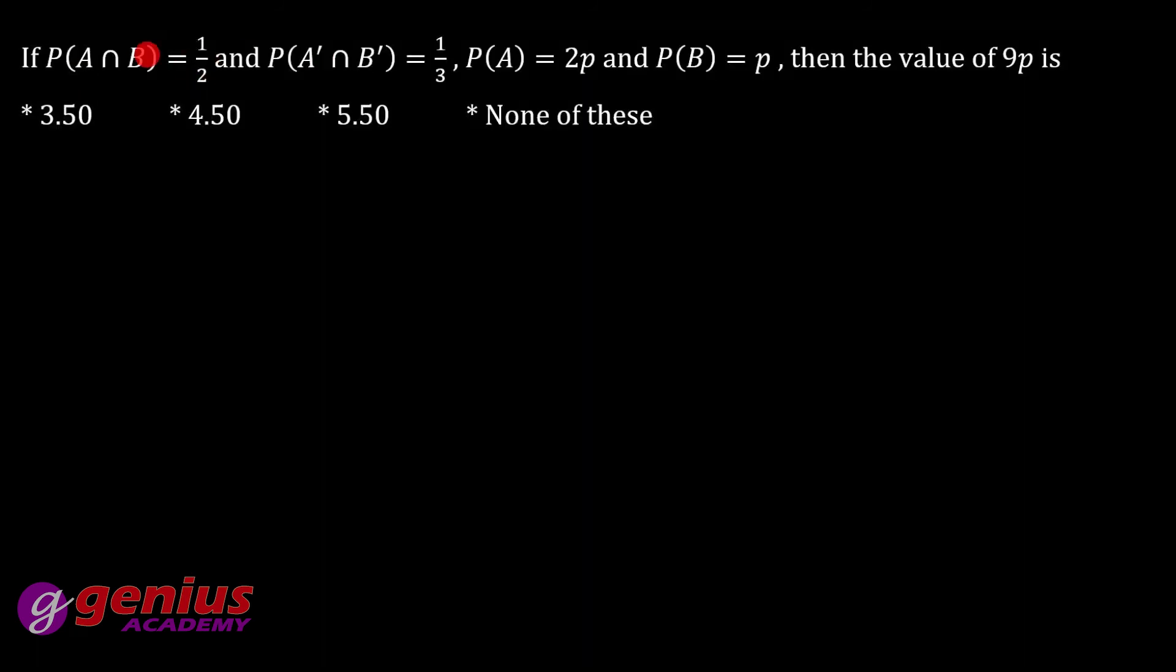Next hai, a intersection b ki probability itni hai, a naught intersection b naught ki ye hai, p of a ye hai, p of b itna diya hai. Find the value of 9p. To bus isme ek formula hai, ek to ye probability of a union b kya hota hai. p of a, p of b, probability of b minus p of a intersection b. p of a kitna hai 2p, p of b kitna hai p, a intersection b bhi diya hai one by two. That means 3p minus half probability of a union b aaya.